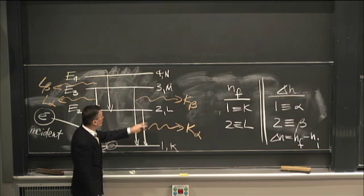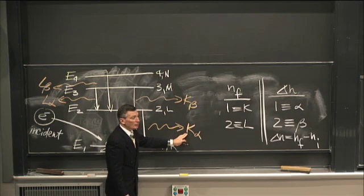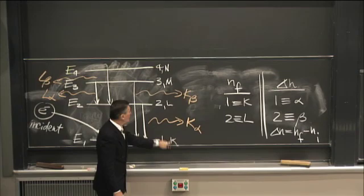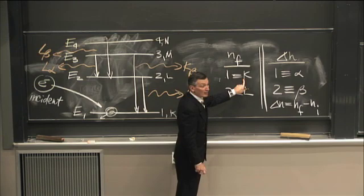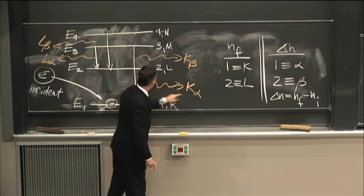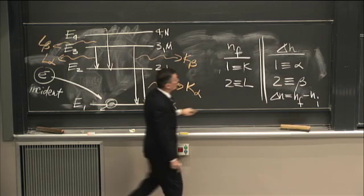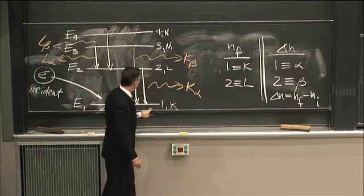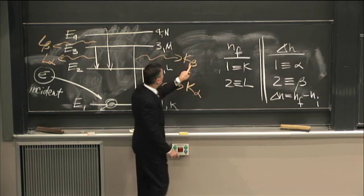Electrons fall from n equals 2 to n equals 1 and emit photons called k-alpha. K because the final shell number was n equals 1. The subscript alpha means that delta n is only 1, going from 2 to 1. Less likely but still possible is the transition from 3 to 1, that's k-beta.